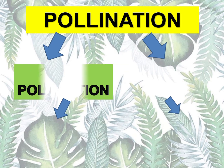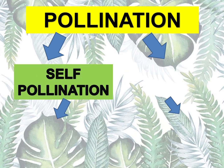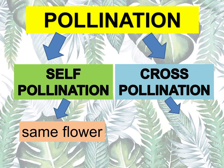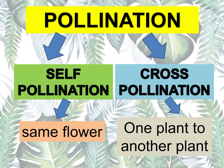Pollination has two types: meron tayong tinatawag na self-pollination at cross-pollination. Pag sinabing self-pollination — same flower. Kung sino yung flower na yun, sa sarili niya mismo nagkaroon ng transfer ng pollen grain. Pag sinabi namang cross-pollination, nagko-cross siya — one plant to another plant. Ibig sabihin, nag-travel yung pollen grains mula sa isang flower, nakapag-travel siya going to another flower of the same kind, saka pa lang naganap yung pollination.